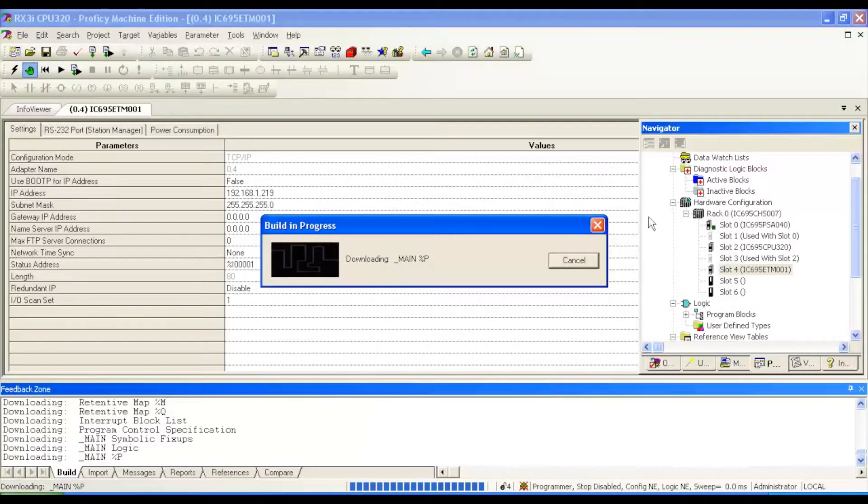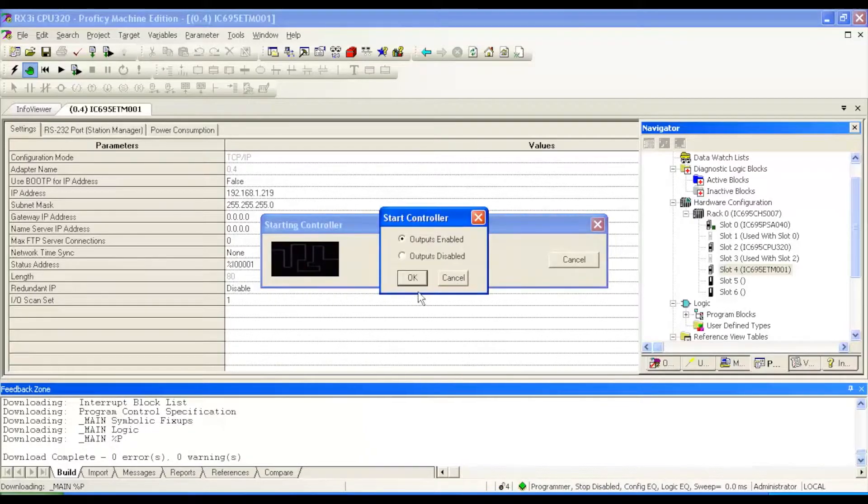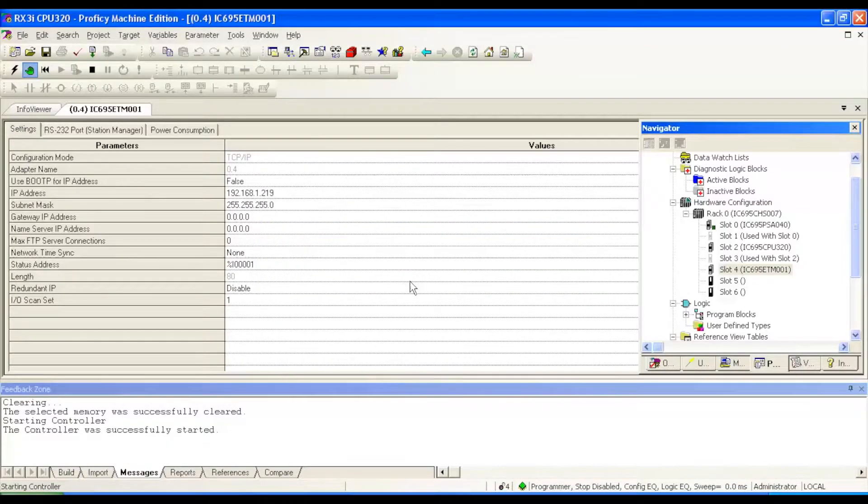Now it's asking me if I'd like to start the controller or enable the outputs and I do want to do that. Now that it's in run mode and we've downloaded the IP address and subnet mask to this ethernet controller, we're going to want to ping it.